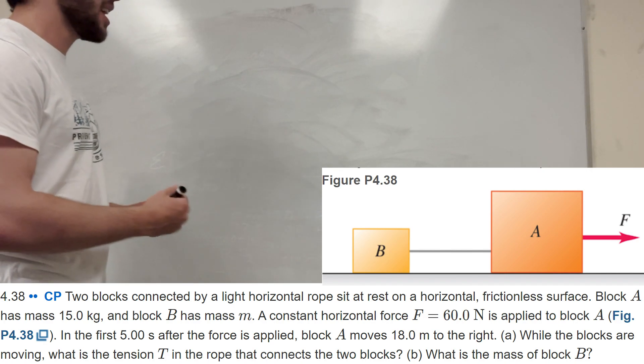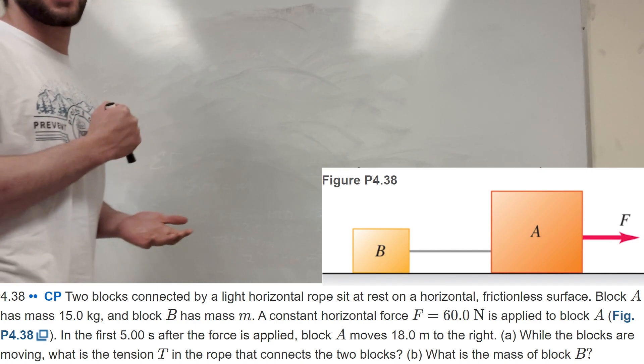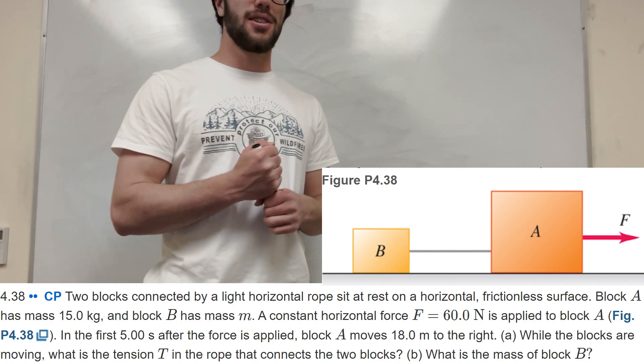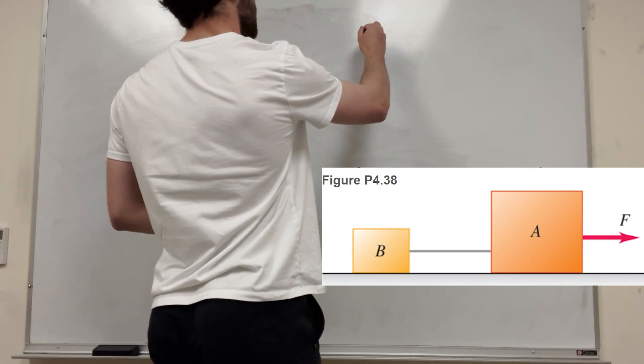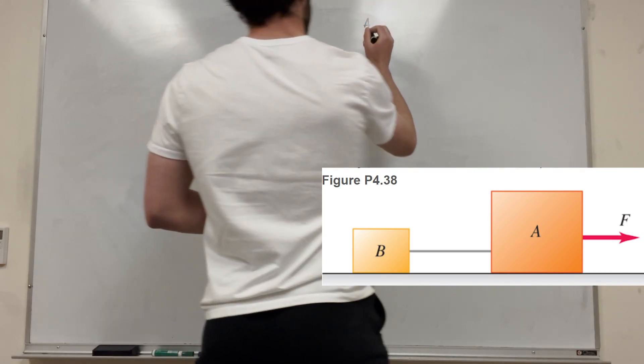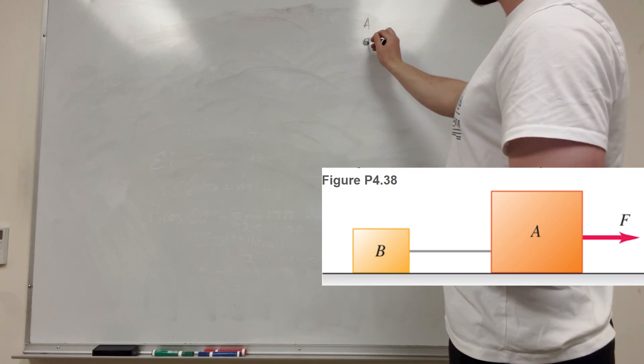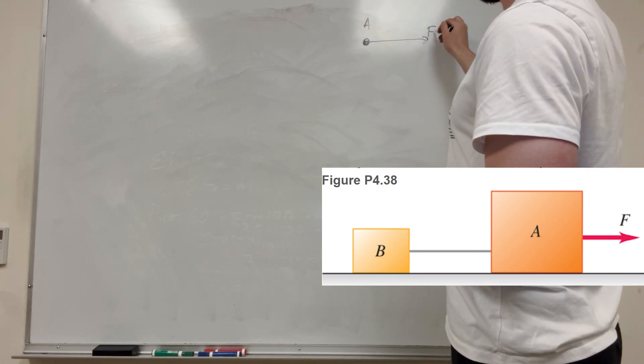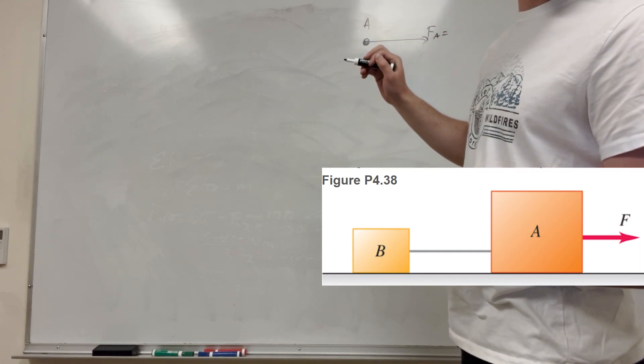So we got these two blocks, right? You can see them somewhere on the screen. Let's draw a force body diagram, because that's how you want to start all these problems. So let's draw the force body diagram for A first. So here's A. So we got our forces on it. So our force here, this is our force applied, and this is equal to like 60 N.